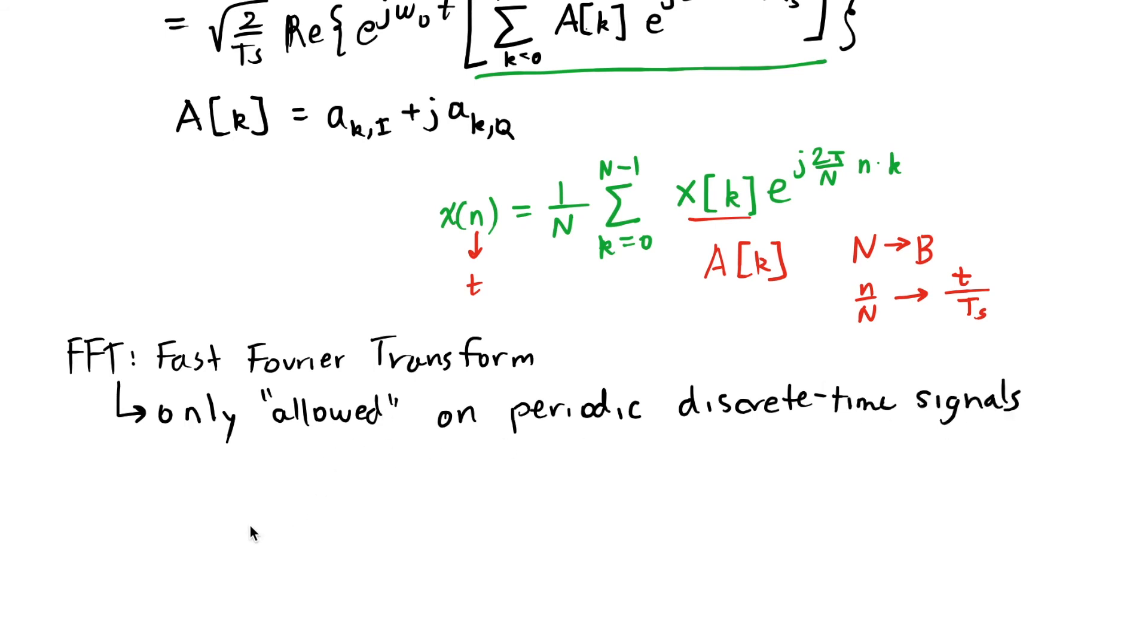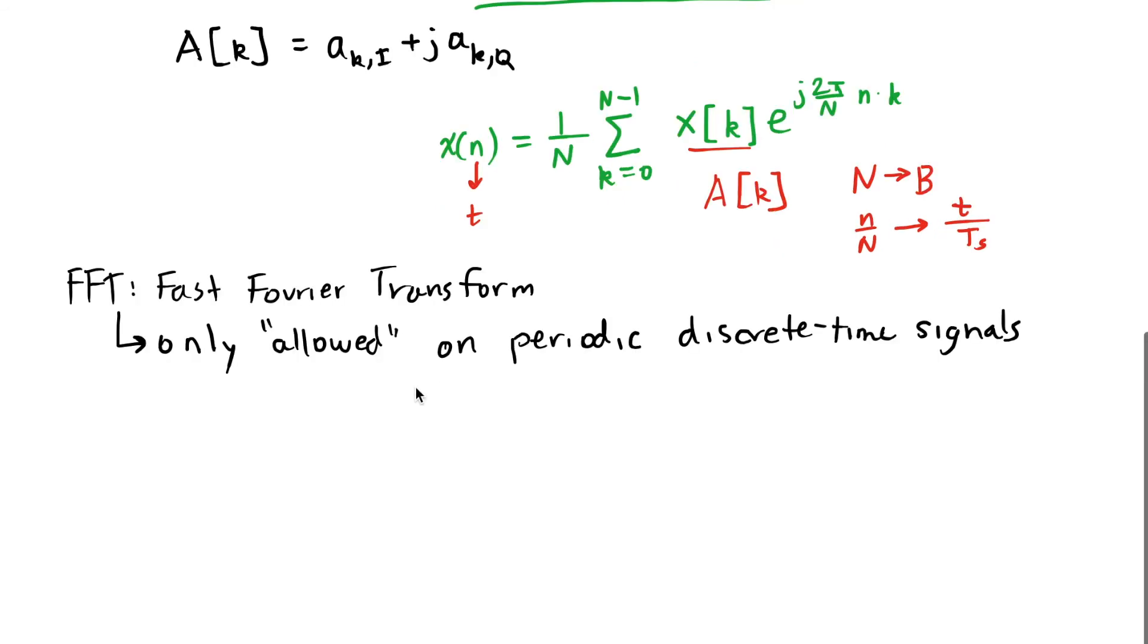And our communication signals are not periodic signals. We're going to send different symbols at each symbol period. That's the whole point. So what we do here is we kind of use the FFT to approximate the DFT and the IFFT to approximate the inverse discrete Fourier transform.